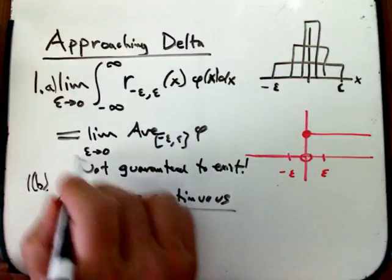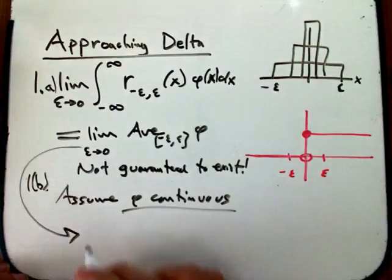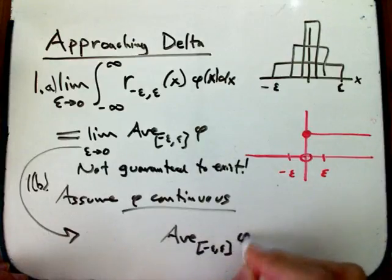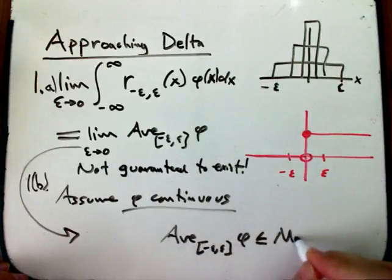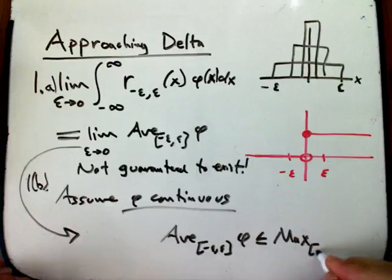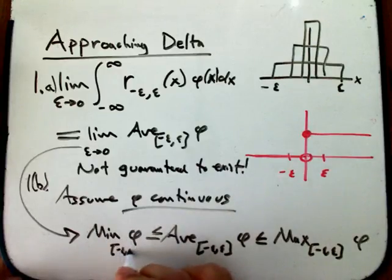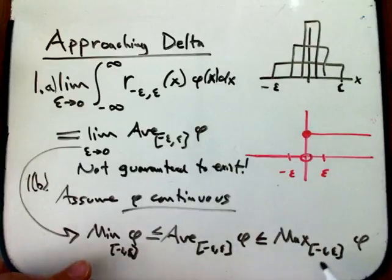So now we're going to look at this limit again. And now we're just going to use almost exactly the argument—actually a streamlined, simplified version of the argument we had when we were looking at convolutions. It's a very similar idea, and it will lead to a cool relationship between convolutions and the delta function.